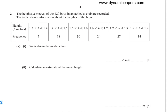Number 2: The heights in metres of 120 boys in an athletics club are recorded. The table shows information about the heights of the boys. Write down the modal class. The modal class is the class with the greatest frequency, which is 30, so the modal class is H greater than 1.5 and less than or equal to 1.6.